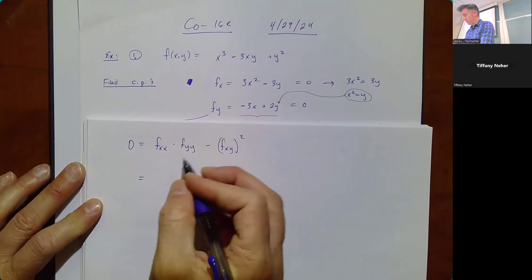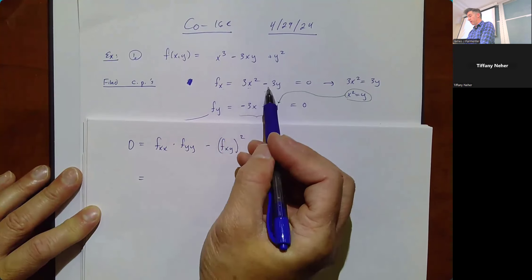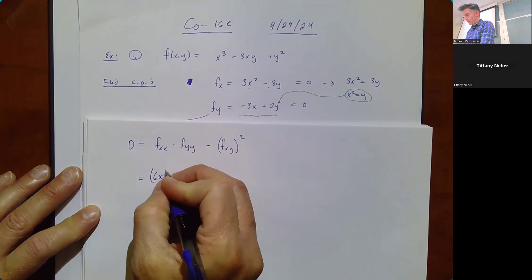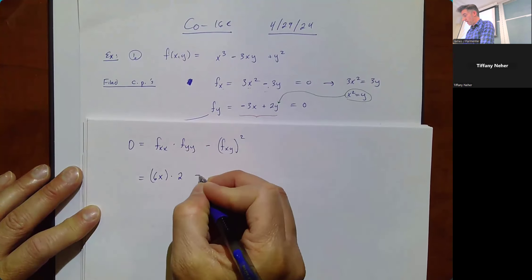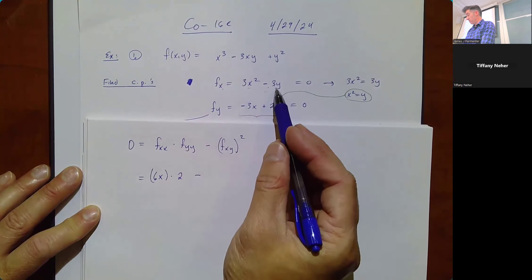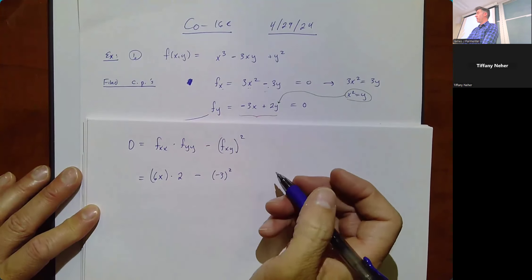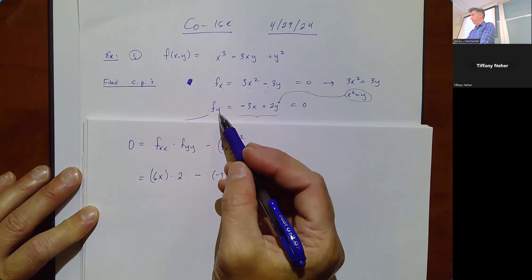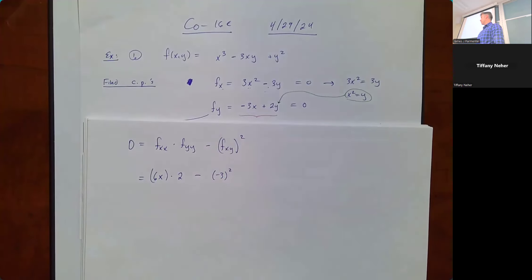For this function: fx = 3x² - 3y, so fxx = 6x. fyy = 2. fxy is the derivative of fx with respect to y, which is -3. We can double-check: fyx = -3 as well. So D = (6x)(2) - (-3)² = 12x - 9.